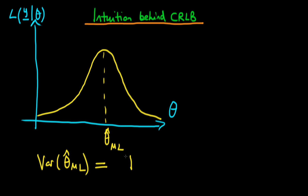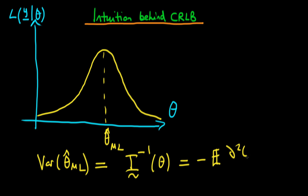We know that this is, at least asymptotically, given by the information matrix, or the inverse of the information matrix, which is itself a function of the parameters. But seeing as the parameter here is just univariate, this information matrix is just going to be a scalar, and we know it's equal to minus the expectation of d²l over dθ², where l represents the log likelihood. So the variance is given by the inverse of this particular term.